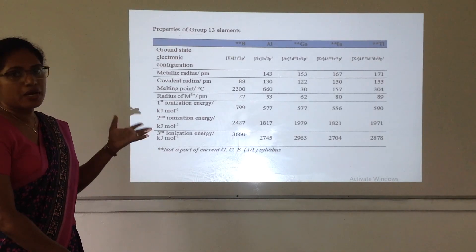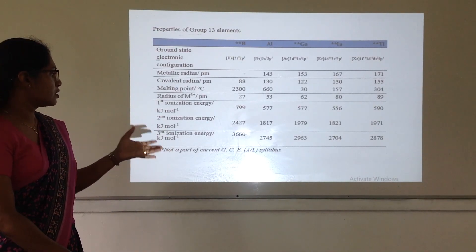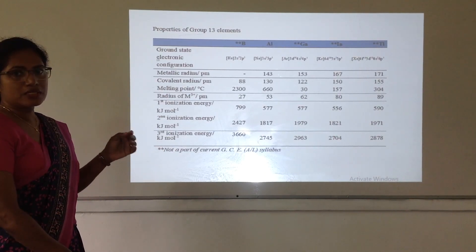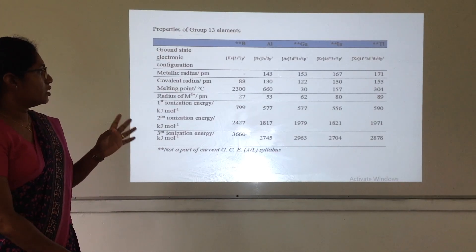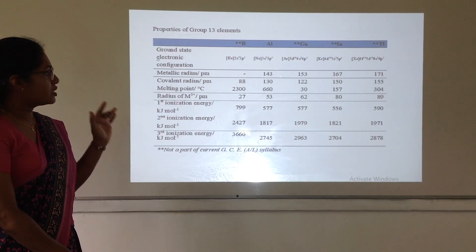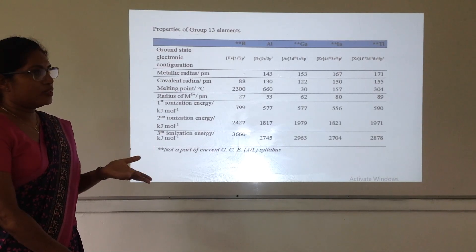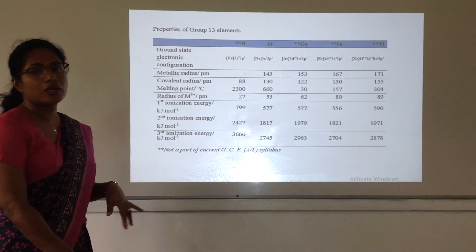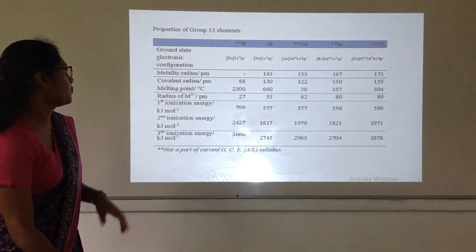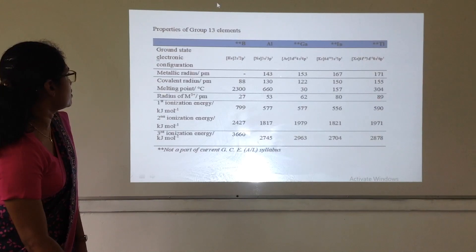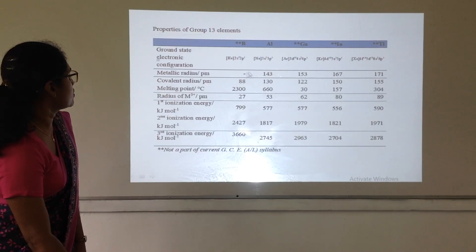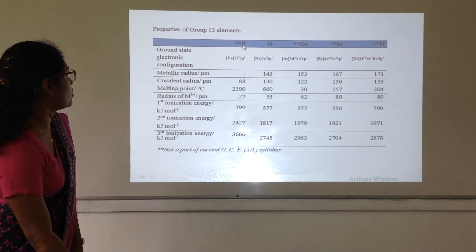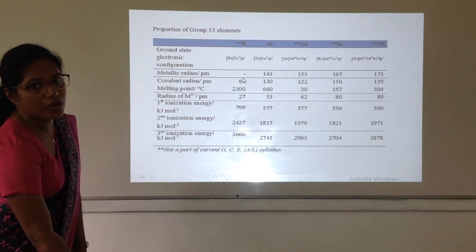Now, we have to consider about the properties of group 13 elements. You don't want to memorize all these values because that is not a part of your syllabus. But you should know the patterns of these values. First, metallic radius.